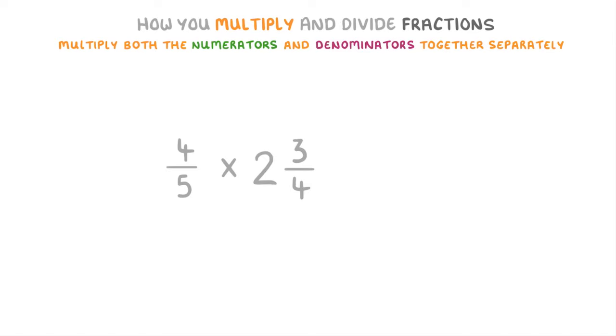In this one we're being asked to multiply 4 fifths by 2 and 3 quarters, which is a mixed number. Now you can directly multiply fractions by mixed numbers, but it's a lot easier if you take the mixed number and convert it to an improper fraction first.